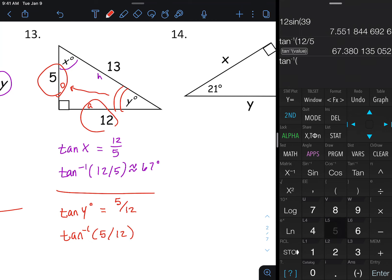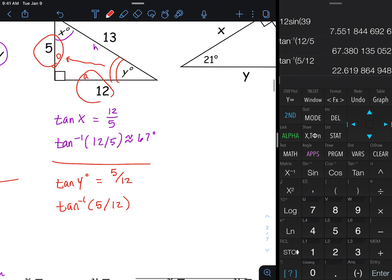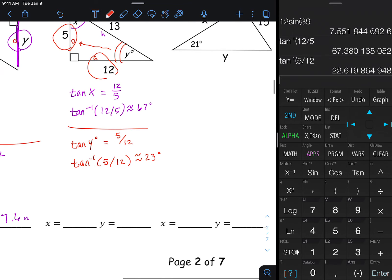That's second tangent, 5 divided by 12, and that should be roughly 22, or actually really 23 degrees after you round up, which is what we should have gotten. So 23 degrees, 67, those do add up to 90, so that checks out right there.